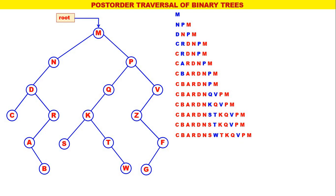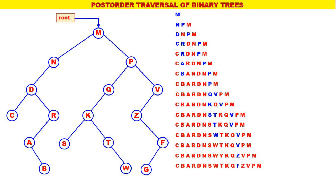Next, the leftmost is W. The post-order for W is W only, with W processed. Next, the leftmost is V. The post-order for V is Z, V — with V processed. Now the leftmost is Z. The post-order for Z is F, Z — with Z processed. So, Z is replaced by F, Z with Z processed.